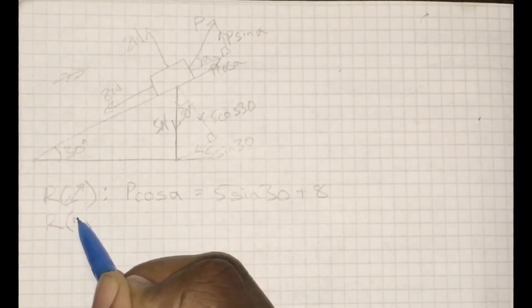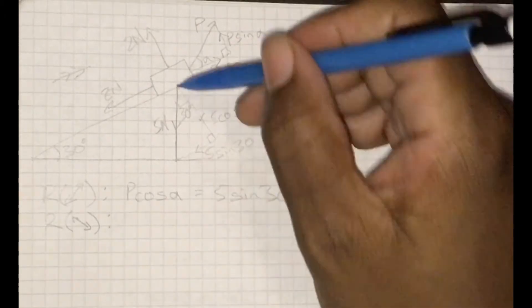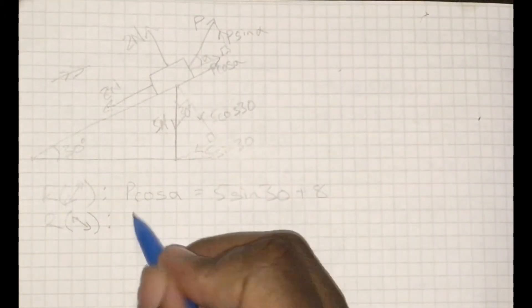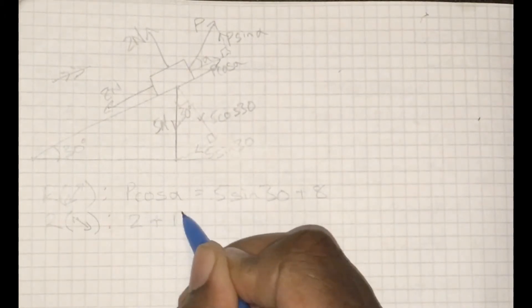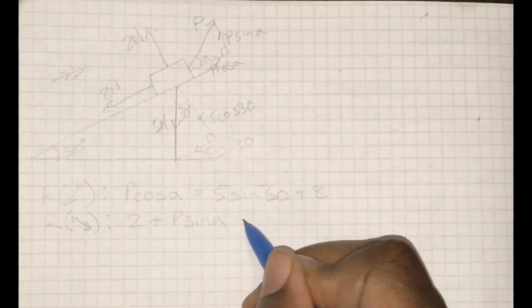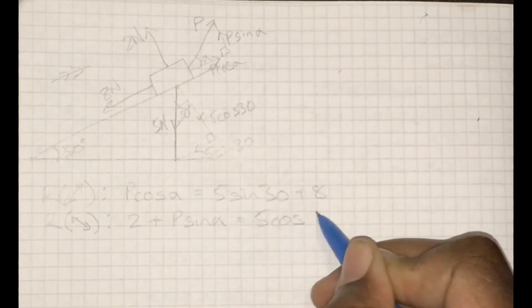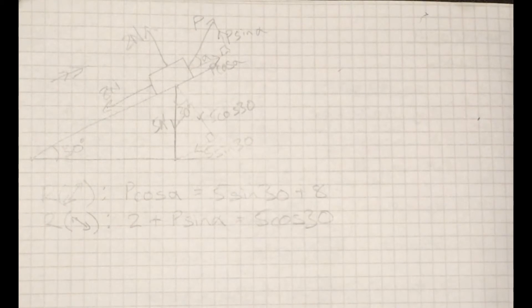All right, let's not forget that this is in equilibrium, so these two must equal each other. Up the slope equals down the slope. Similarly, perpendicularly up equals perpendicularly down, and we once again have three forces to work with.